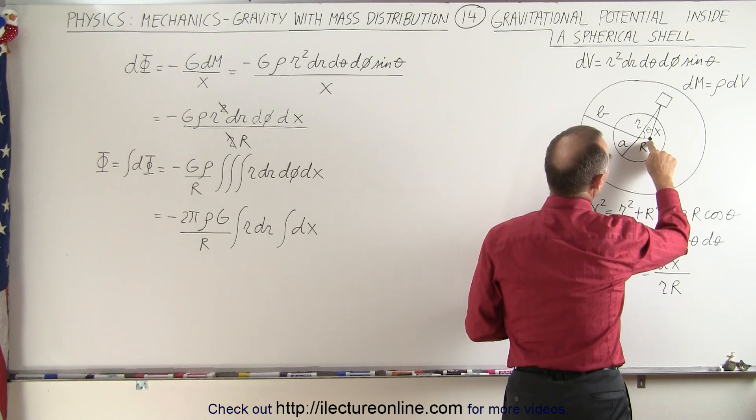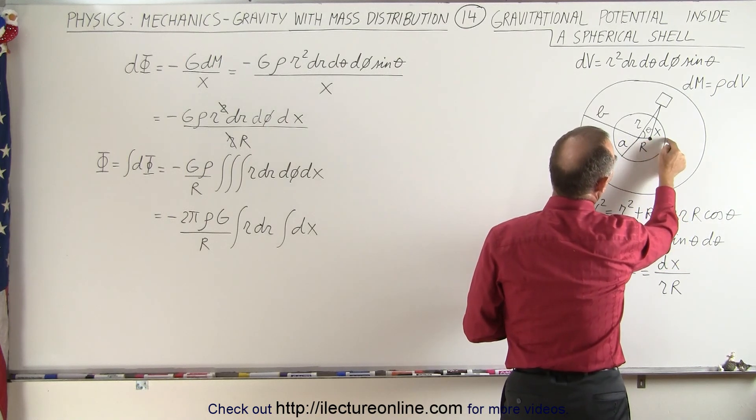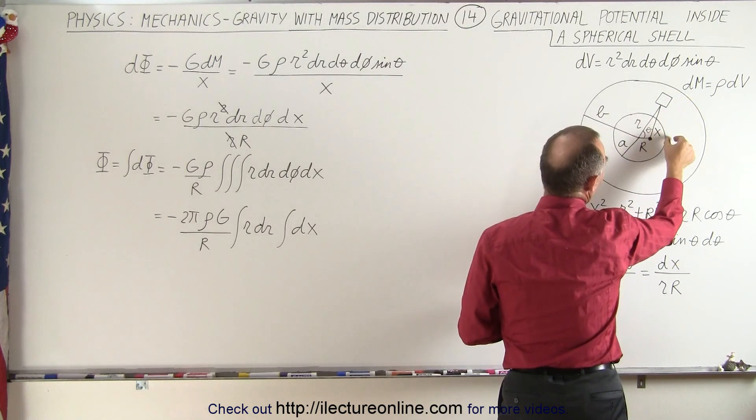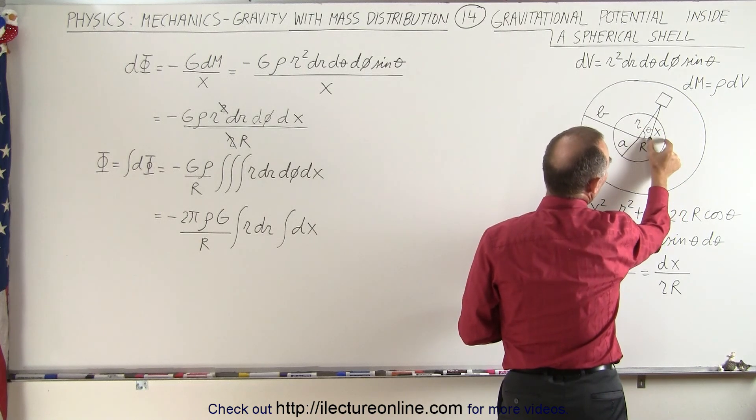So from this position here, the smallest that x can be when we take this volume element and put it right there would be this distance right here,